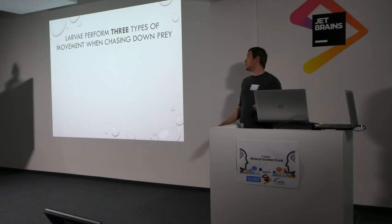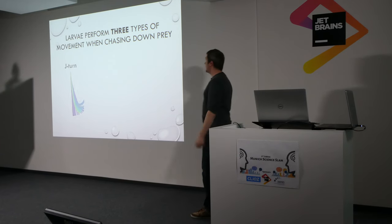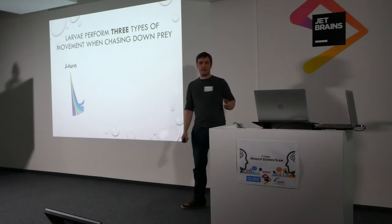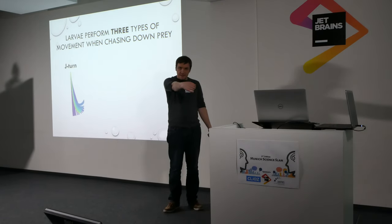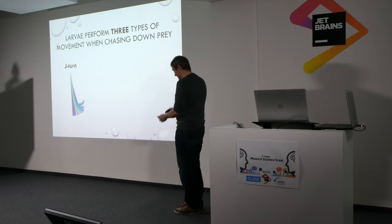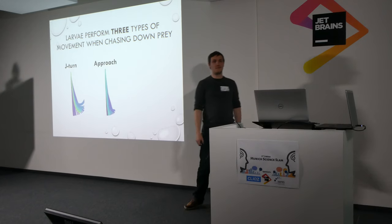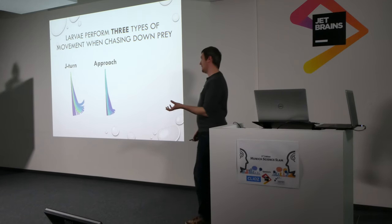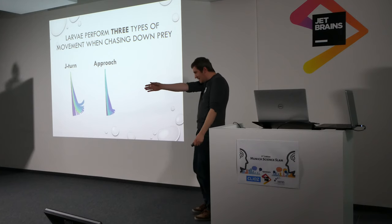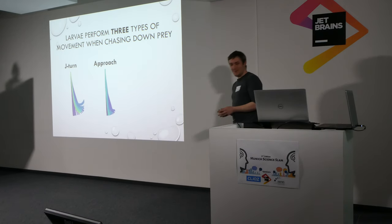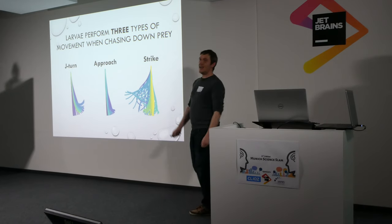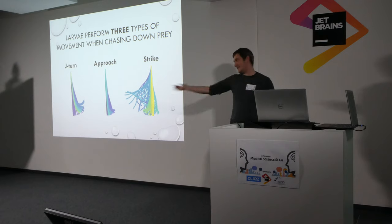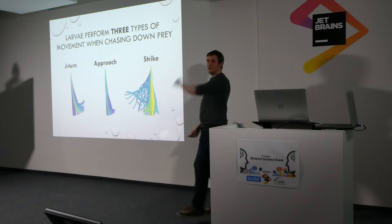What we can see is that when they're taking down prey, there are three types of movements the fish make. The first is what we call a J-turn — the fish hooks the tip of its tail like a J, and it rotates itself in the water. The second type is what we call an approach spoon — the fish wiggles the tip of its tail a little bit and then scoots forward in the water. The third type is what we call a strike — the fish wags its tail as fast as it can and hurtles through the water towards the prey.